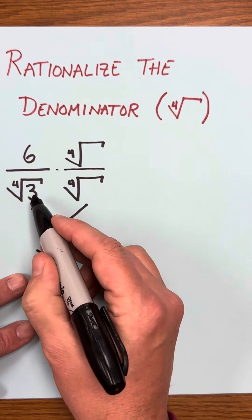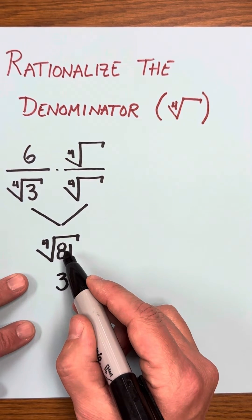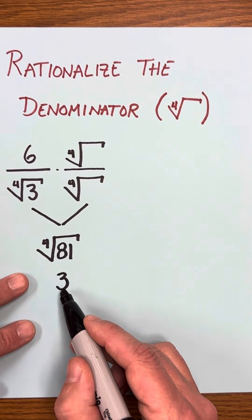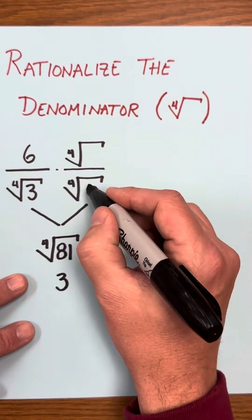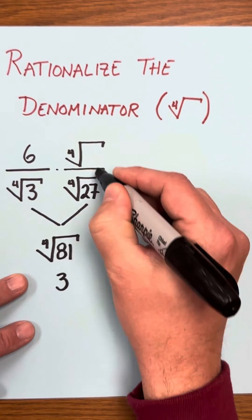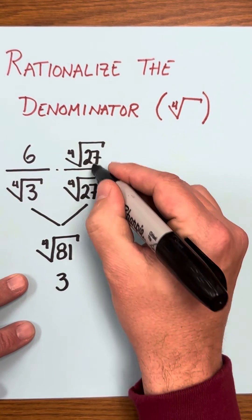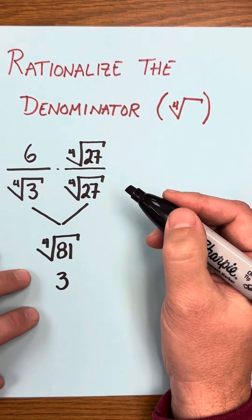So we have to figure out 3 times what number would get us the 81 that would then simplify under the radical to 3. So if we know that 3 times 27 is equal to our 81, then we know what number to multiply to this fraction.